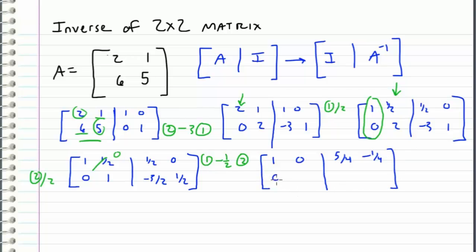And then I have the second row which all remains the same. So what I've done is I have successfully reduced this left side to the identity matrix which makes this matrix right here A inverse.